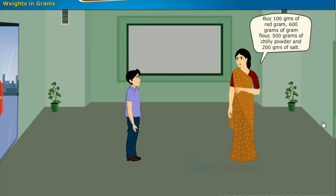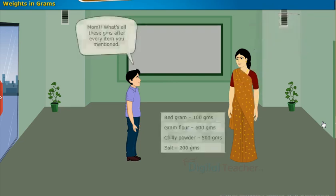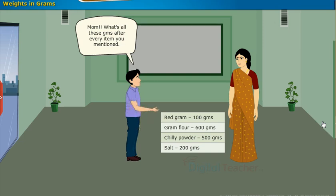Buy 100 grams of red gram, 600 grams of gram flour, 500 grams of chili powder, and 200 grams of salt. Mom, what's all these grams after every item you mention?